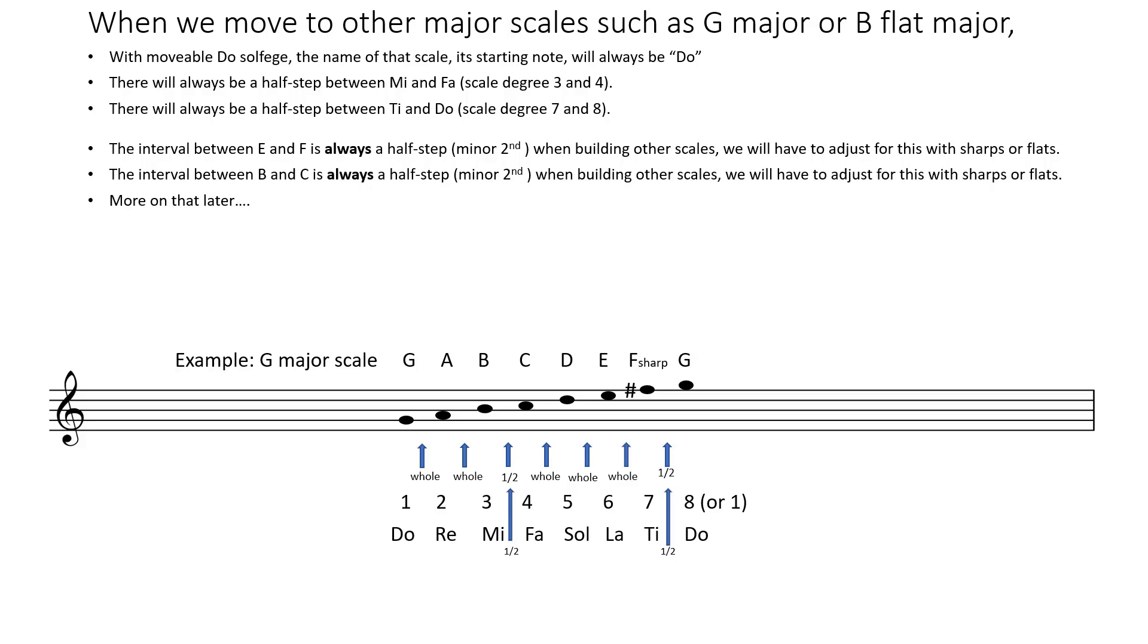We'll go into this in detail later, but for now here's an example. If we were to build a G major scale, G is scale degree 1 or Do. A, a whole step higher is Re or scale degree 2.